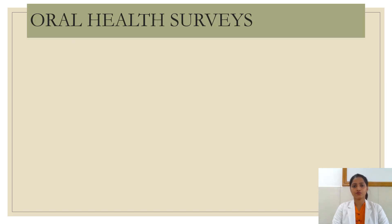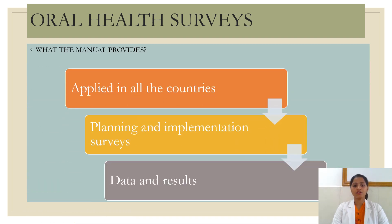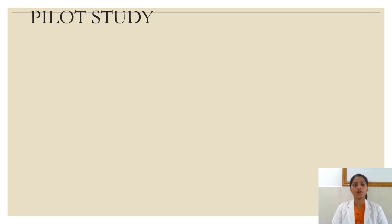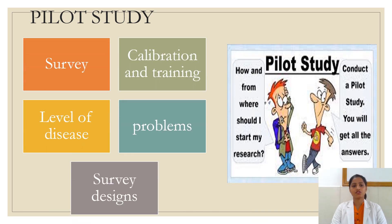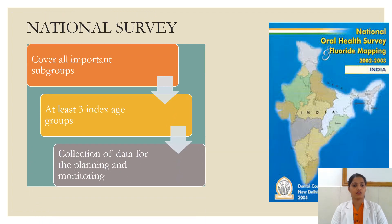To recall what we have seen: there is a manual for oral health survey which covers the findings collected, the application procedure, planning and implementation, and all the data and results of the oral health survey conducted. It is called the Basic Oral Health Survey Manual. We have seen about the pilot study — it is a type of survey where calibrating and training of the examiner is important. We have also seen about the national health survey, which covers all subgroups with three or more index age groups for collecting data, planning, and monitoring.